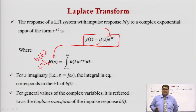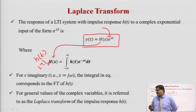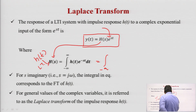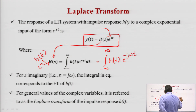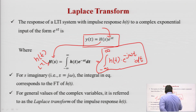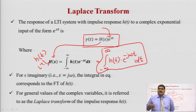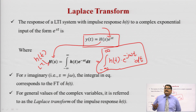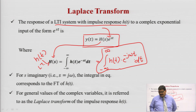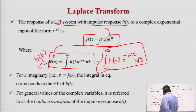In this equation, if we put S = jω, we get the integral from minus infinite to plus infinite of h(t)·e^(-jωt) dt. This is the basic mathematical representation of the Fourier transform — the Fourier transform of h(t), where h(t) is the impulse response of the LTI system. For general values of the complex variable S, this equation is referred to as the Laplace transform of h(t).